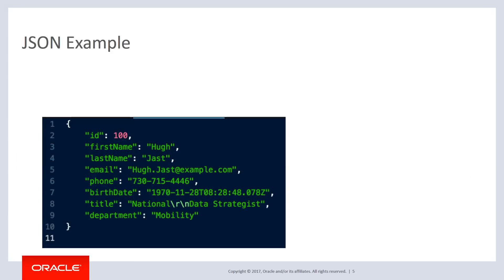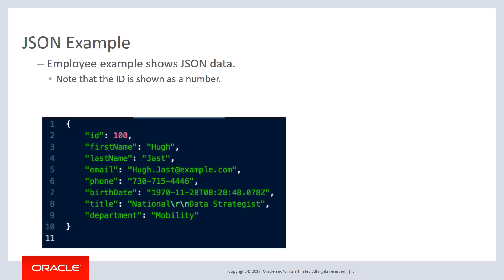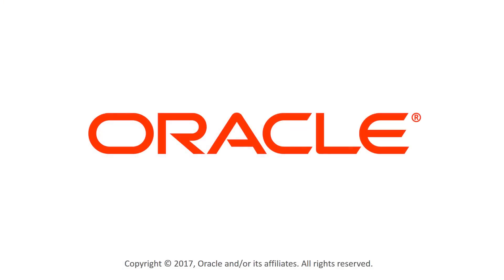Finally, there's an employee example from the application we build in this MOOC, showing one object or one record. At the top there is an ID which is a number, and everything else is a series of name-value pairs using strings. Curly braces wrap the whole thing, with commas separating individual fields. That's an introduction to JSON and completes this lesson.